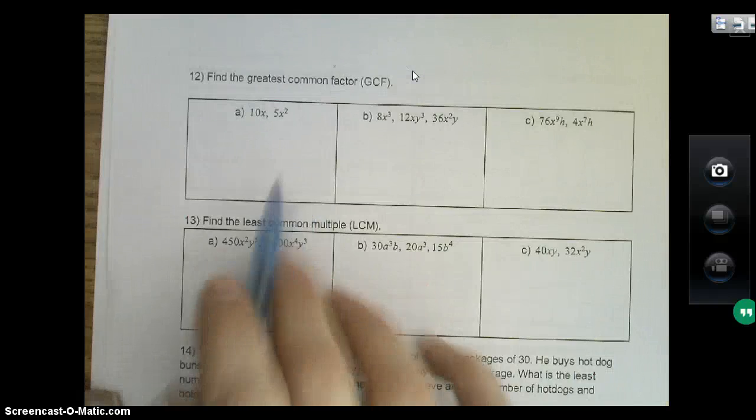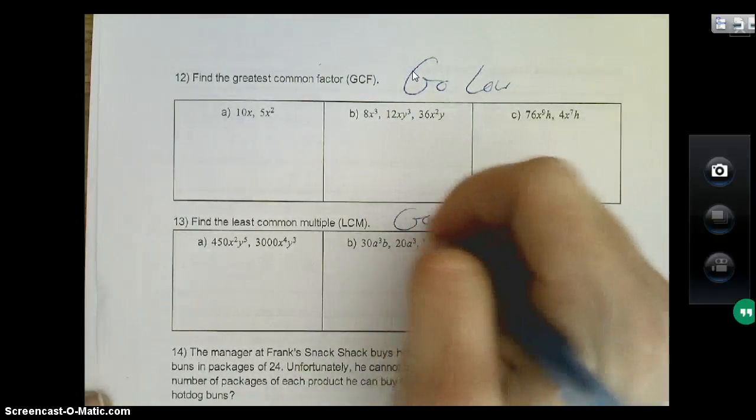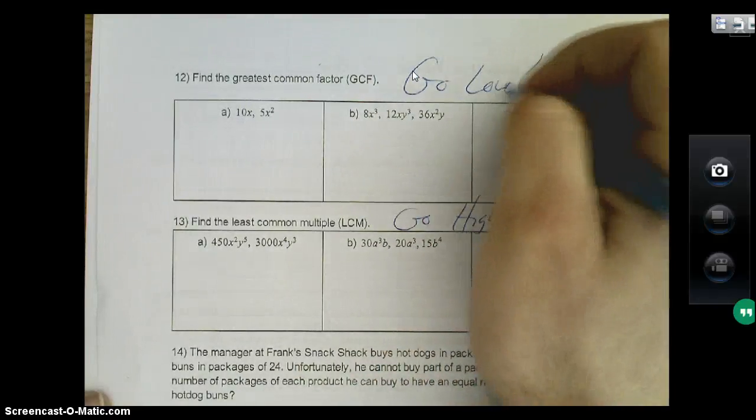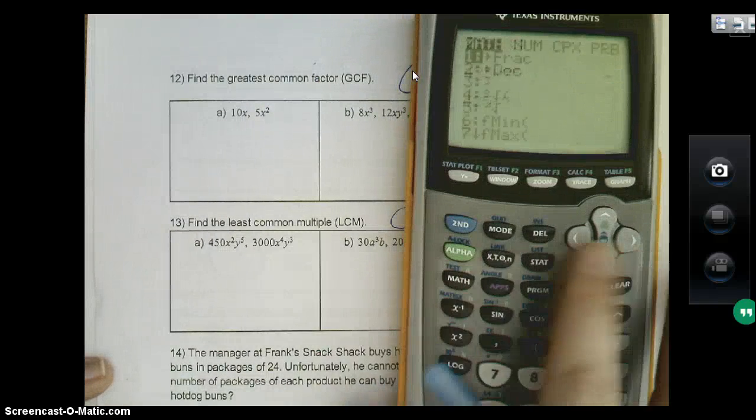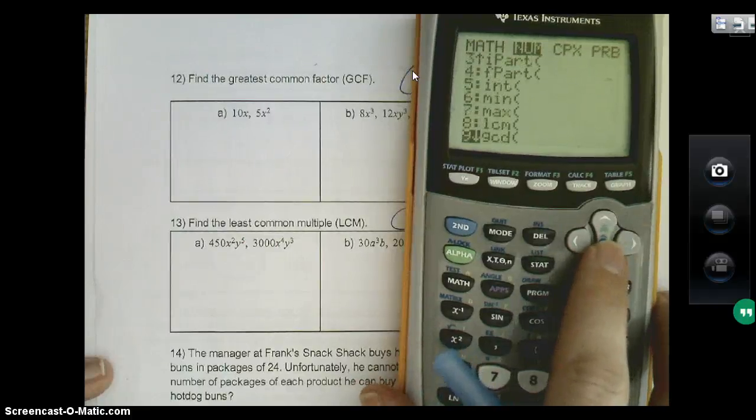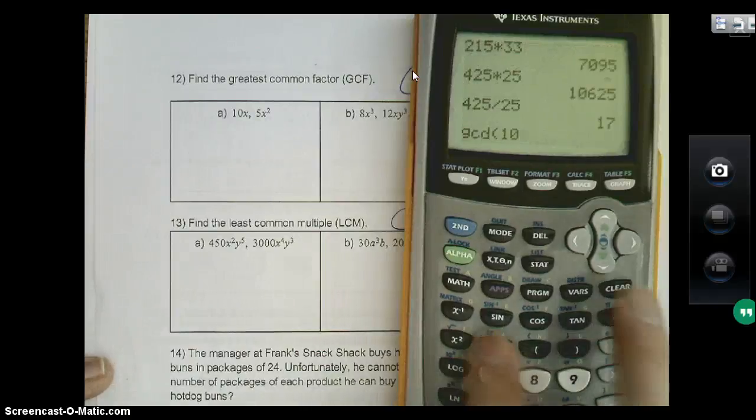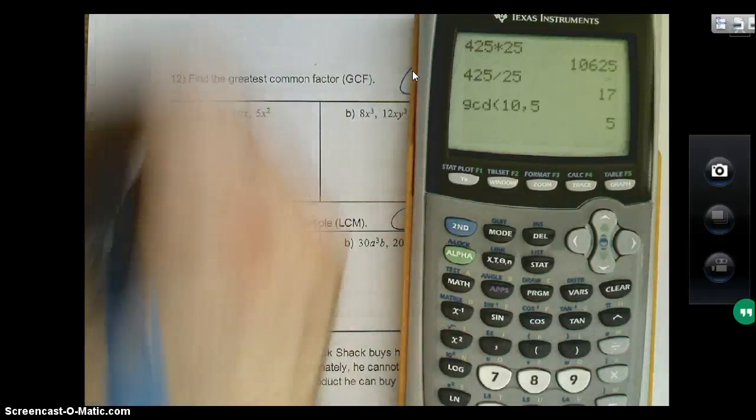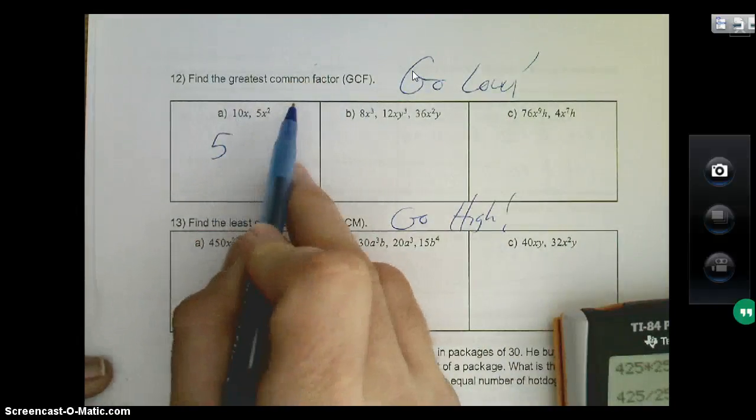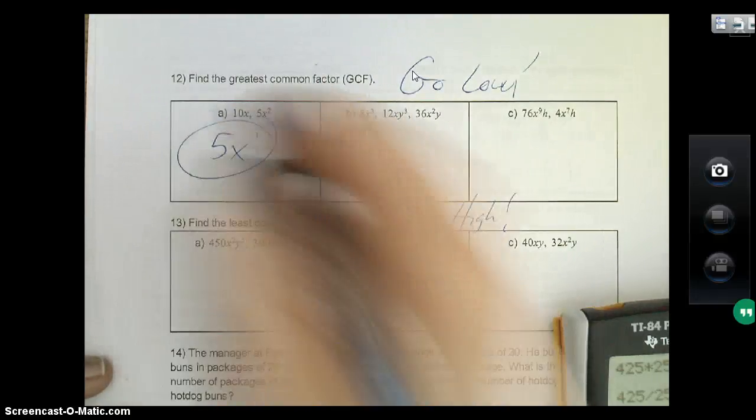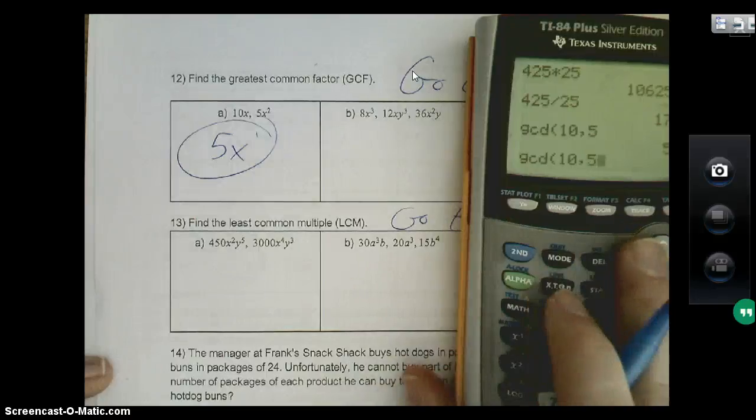So we got here GCF, greatest common factor, you go low. LCM is when you go high. Sorry for my terrible handwriting, it's really bad. All right, so for GCF, don't forget your calculator. If I hit math, go to the right one and scroll down, there's your GCD. It looks like GCD in your calculator. 10 and 5—it does not do variables, it's just the numbers—so my GCD is 5. Then you say which one's lower, x to the 1 or x²? Well x to the 1 is lower. Boom, done.